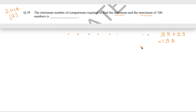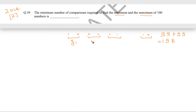But there is another way to do it with much fewer comparisons. You can group the 100 elements into groups of two. So this is group 1, group 2, group 3, and similarly up to group 50. All 100 elements divided into 50 groups.